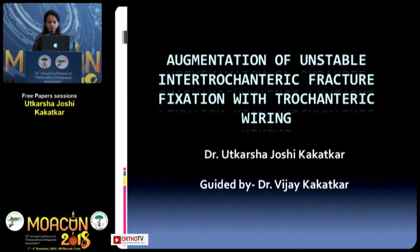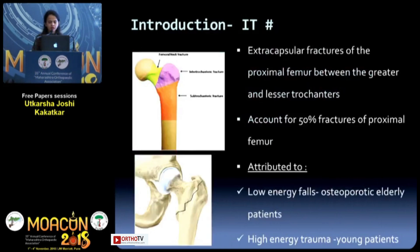A very good morning to everyone. I will be speaking about augmentation of unstable IT fracture fixation with trochanteric wiring. To begin with, IT fractures are extracapsular fractures of the proximal femur between the greater and lesser trochanters, which account for approximately 50% of the fractures of the proximal femur.